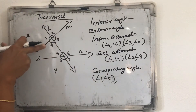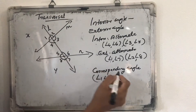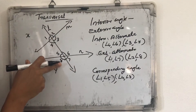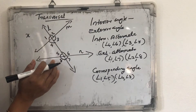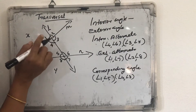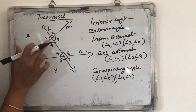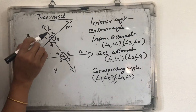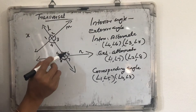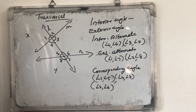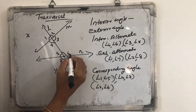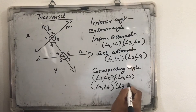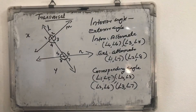Another set: what is the corresponding angle of angle 4? It will be angle 8. Angle 4 and angle 8 — angle 4 is an interior angle, but angle 8 is exterior. Both are on the same side of the transversal, and both are in the same position at their respective intersecting points. Another pair: the corresponding angle of angle 2 is angle 6. The corresponding angle of angle 3 is angle 7. These are the important angles formed when two lines are cut by a transversal.